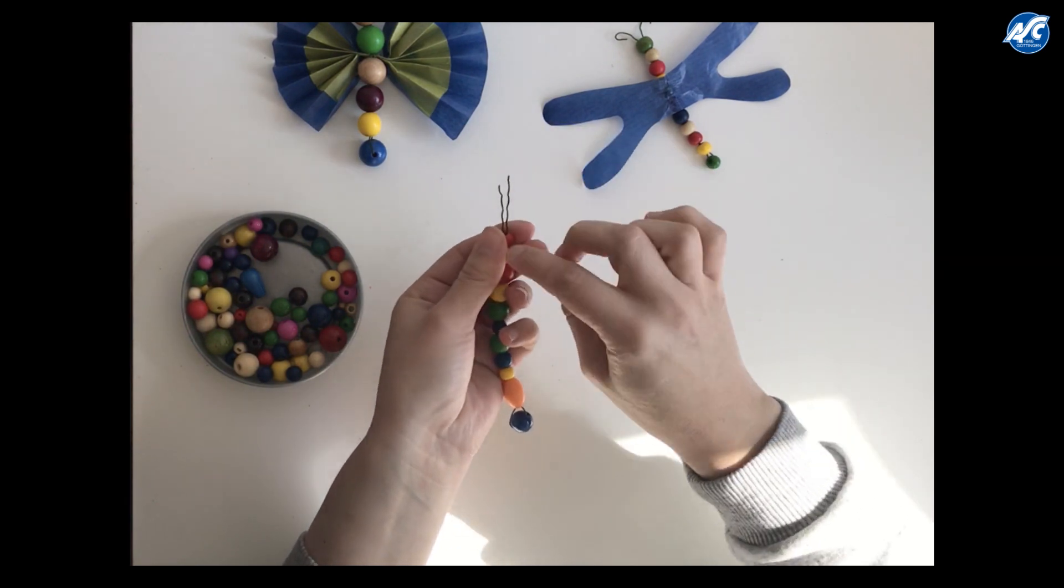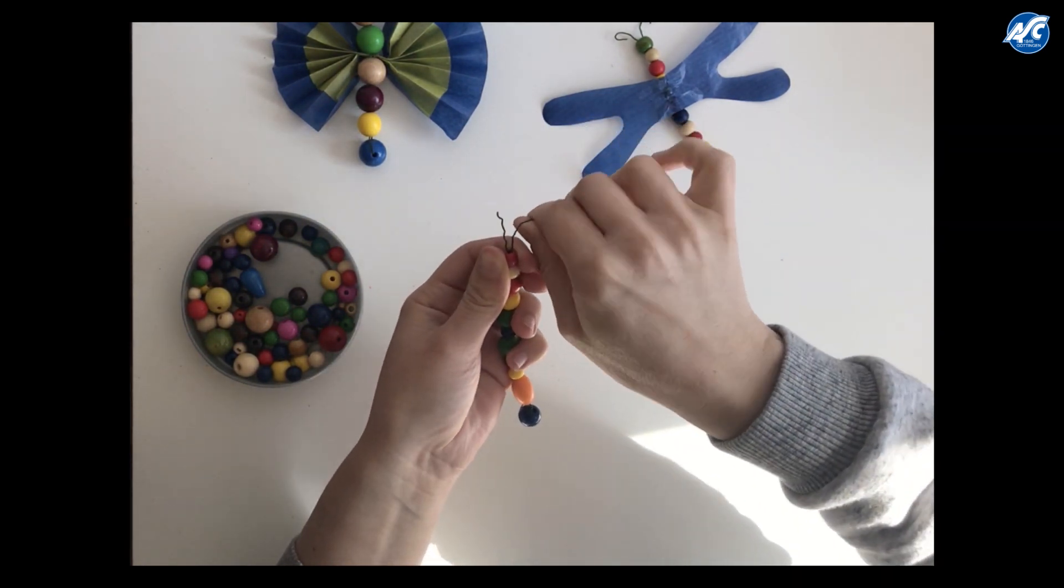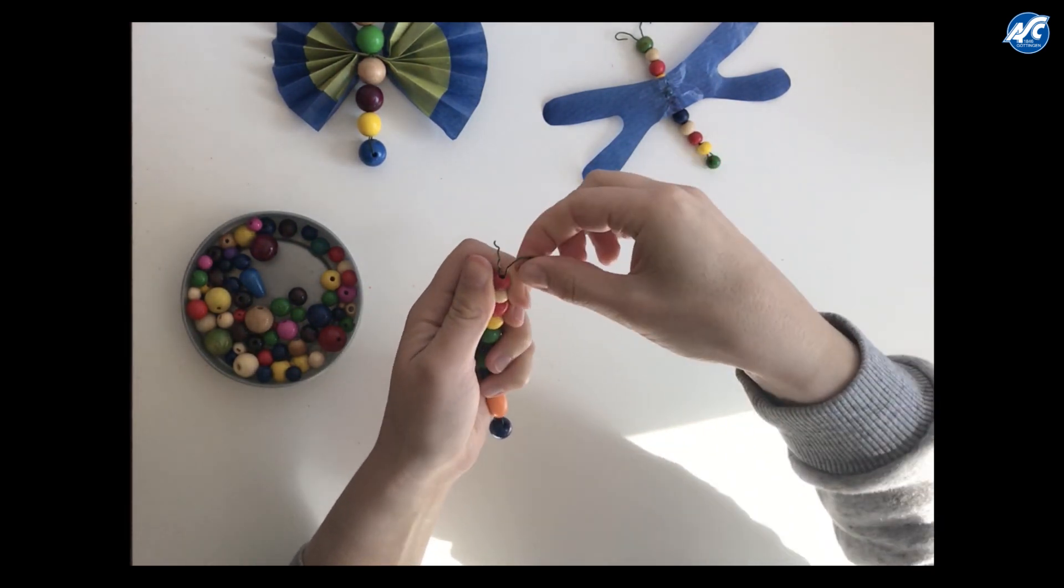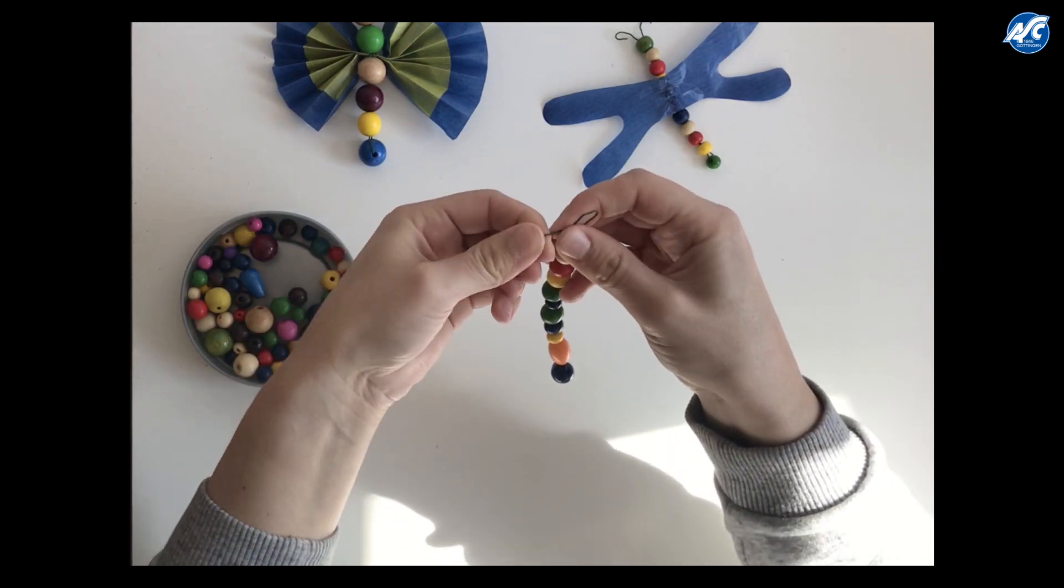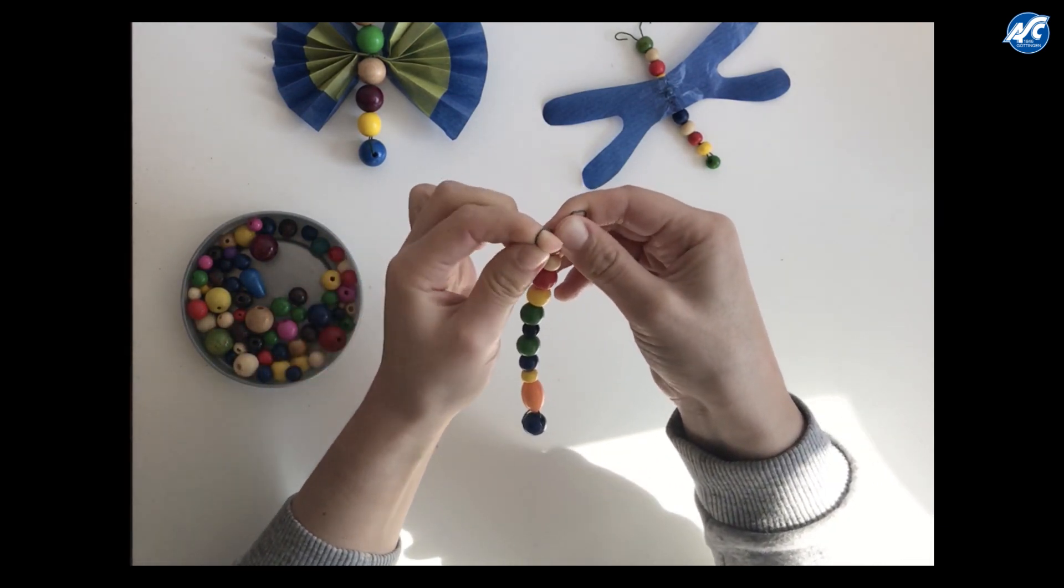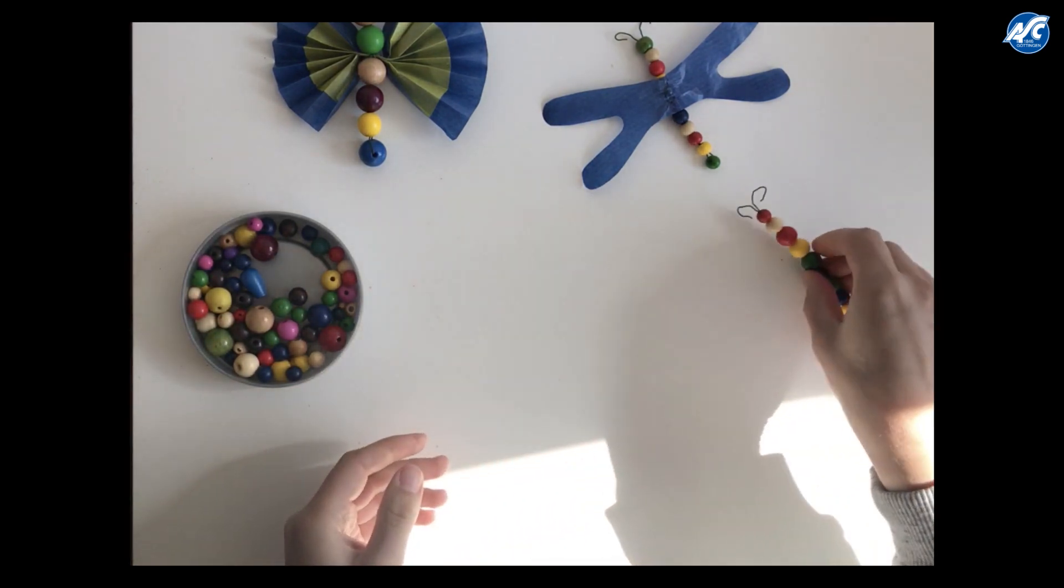So to make sure that your beads will not fall off the wire again, you just bend it over a little bit. So it will look like the feelers of your little animal. Like this. Alright. You can put it to the side for a second.